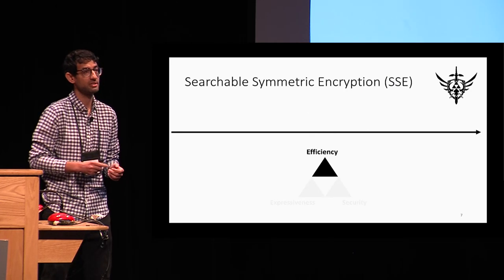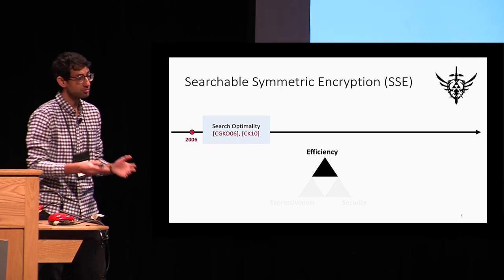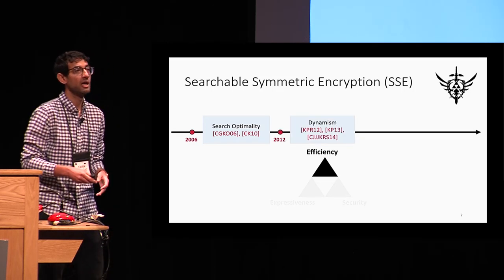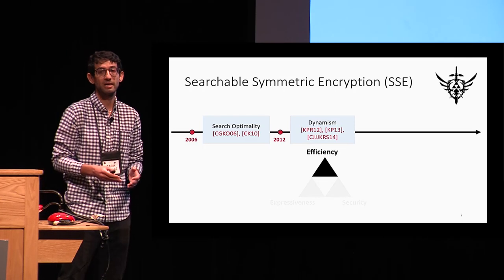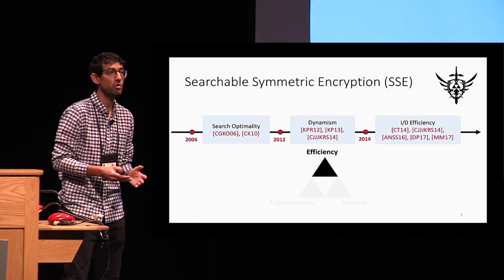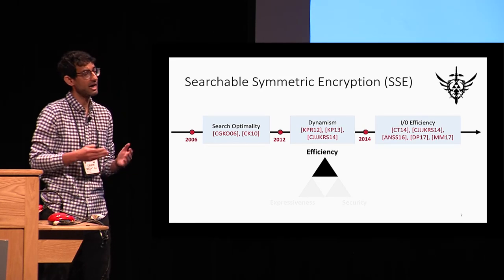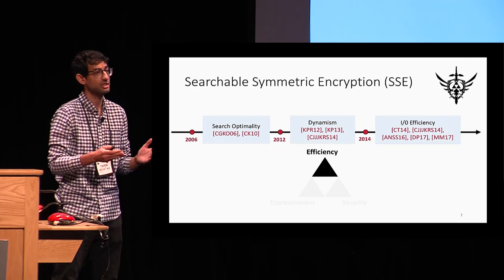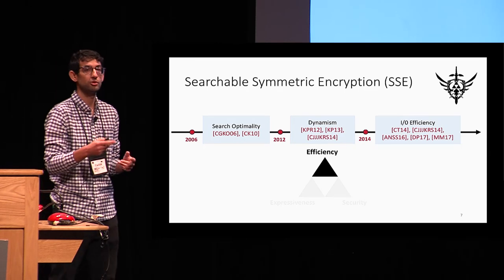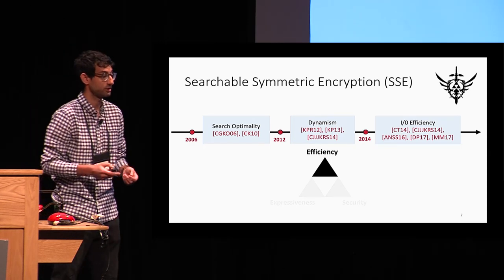When it comes to efficiency, and in SSE in particular, achieving optimal search was the first milestone. Several works followed to achieve dynamism and optimal search in dynamic SSE constructions. And recently, several works targeted designing IO-efficient constructions, in particular achieving better search locality and storage trade-offs. The two talks later in this session will be on how to achieve better trade-offs.